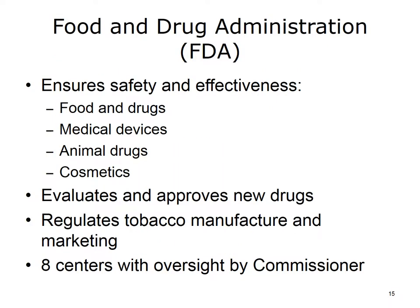The Food and Drug Administration, or FDA, protects the public by ensuring the safety and effectiveness of foods and drugs. The FDA also regulates medical devices, animal drugs, cosmetics, products that emit radiation, and other toxic substances. The FDA evaluates and approves new drugs and regulates the manufacture and marketing of tobacco products. The FDA is organized into eight centers with oversight by a commissioner.